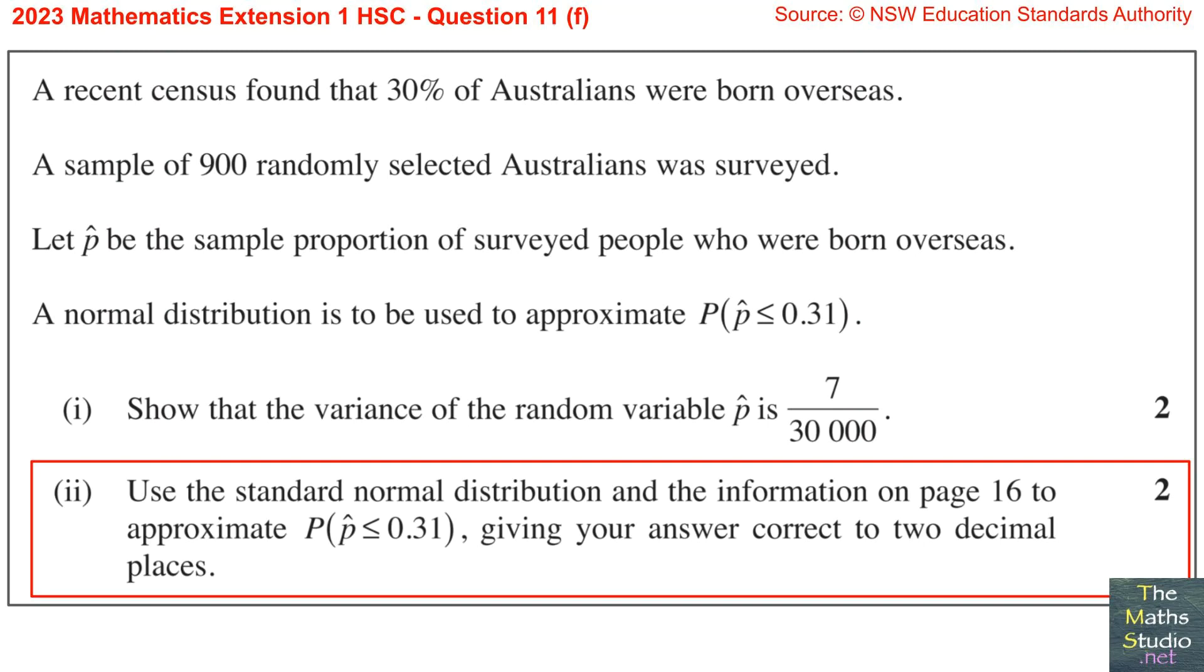Part 2. Use the standard normal distribution and the information on page 16 to approximate the probability that the sample proportion is less than or equal to 0.31, giving your answer correct to two decimal places.